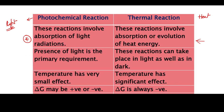Coming to the second point: presence of light is the primary requirement for a photochemical reaction — there must be light. But in thermal reactions, light does not play any major role; even in the dark, the reactions can take place. Next, temperature has a very small effect in photochemical reactions, but in thermal reactions temperature has a very significant effect.